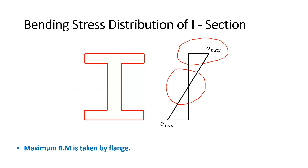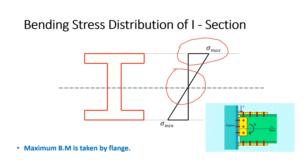So if you want to provide a moment connection, you should connect the flange of the beam with the column. In this picture, you can see that both the web and the flange are connected with the column — so this is a moment connection. With this simple concept, you can identify which connection is a shear connection and which is a moment connection.